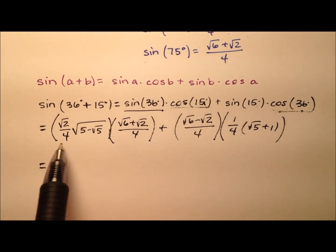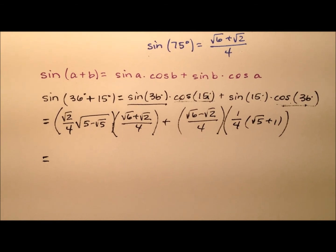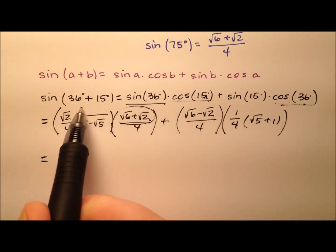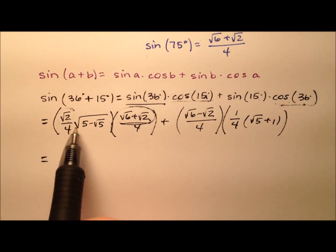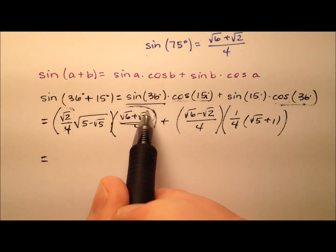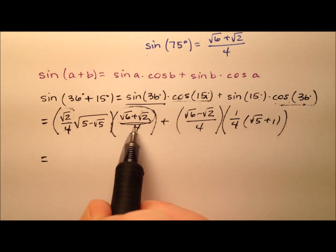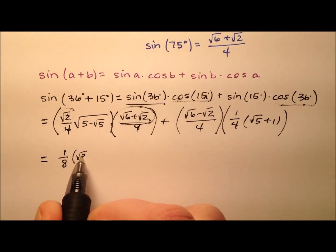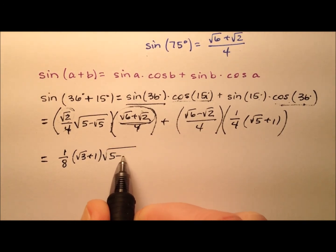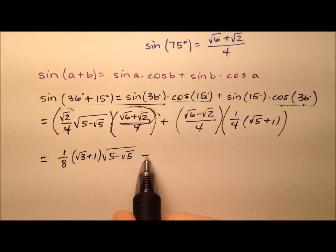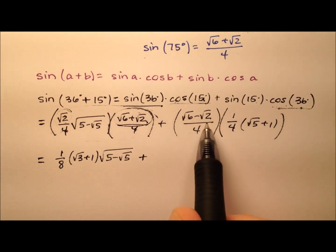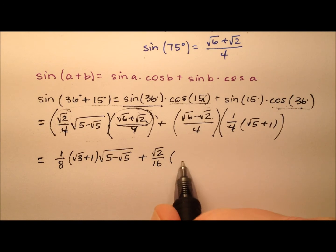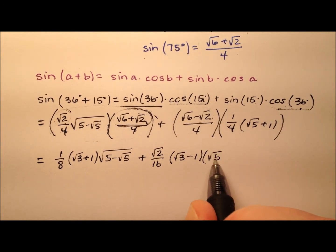So we have this expression — it doesn't look very nice. I wonder how we can fix it up. Here I have the square root of 6 plus the square root of 2. If I factor out a square root of 2, it can multiply by this square root of 2 and I'd get a real 2, which would cancel with the 4 in the denominator. So let's go ahead and do that — factoring this out gives us 2 over 16, which is just one-eighth. So we put one-eighth and then the leftovers: the square root of 3 plus 1, and the radical expression. To that we add — doing the same thing and factoring out the square root of 2 — we get square root of 2 over 16, multiplied by the square root of 3 minus 1, and then the square root of 5 plus 1.